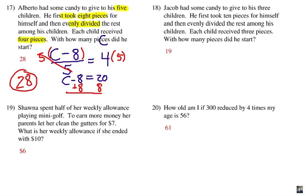Let's see how you did on number 18. Jacob had some candy to give to his three children. Okay, a similar problem it looks like. He took ten pieces for himself and evenly divided the rest among his children. Each child received three pieces. Alright, you notice how it is exactly the same problem with different numbers. So, if you had struggled with 17, you should try 18 right now.